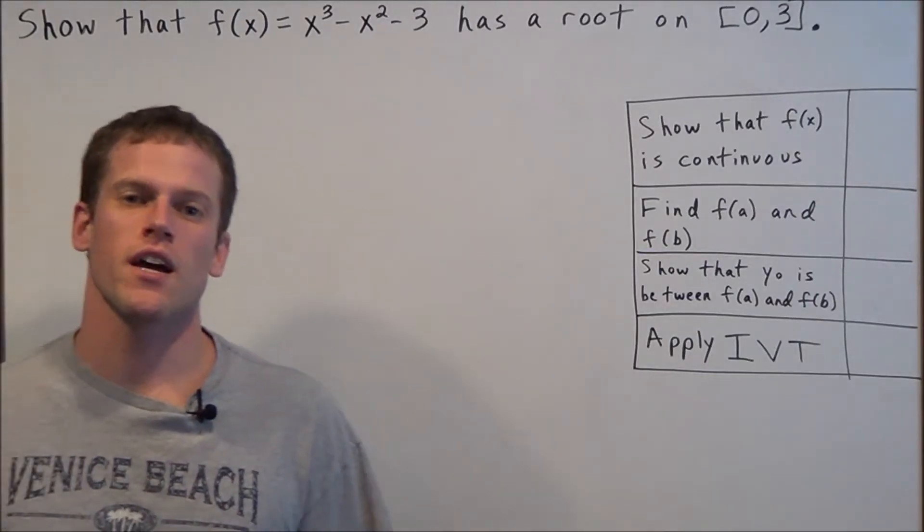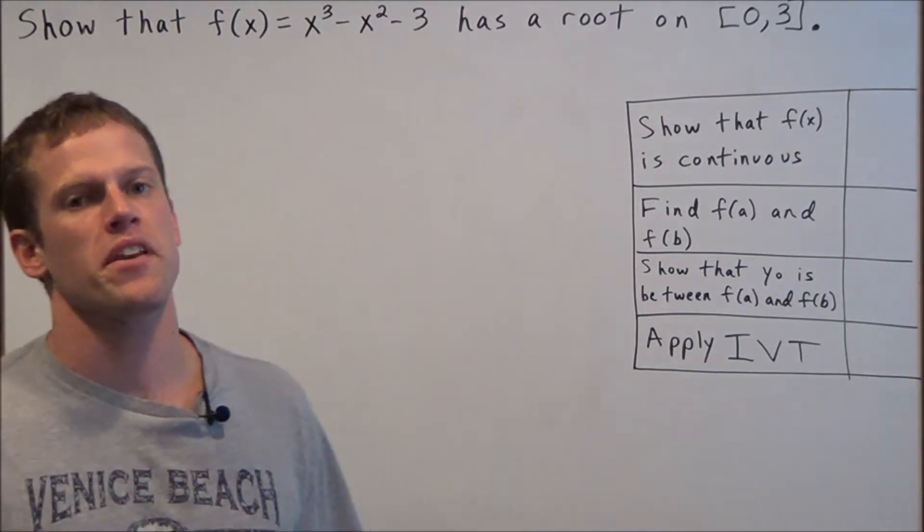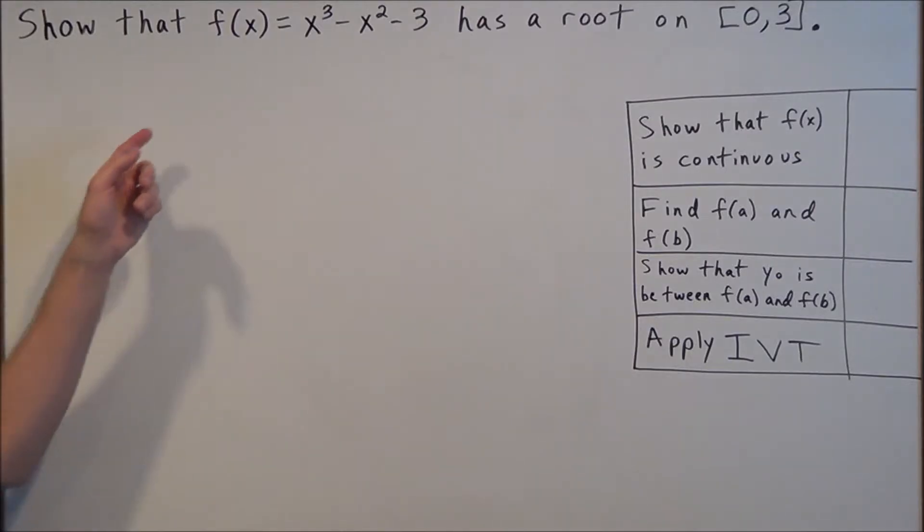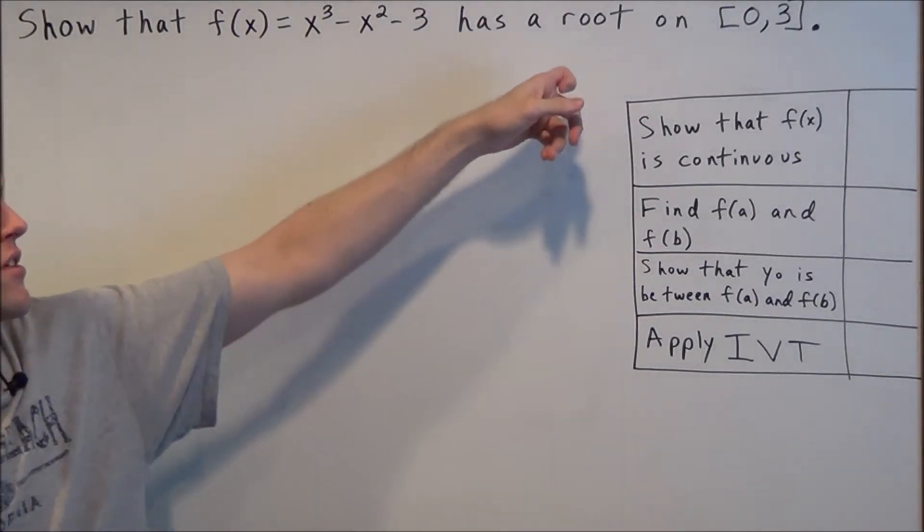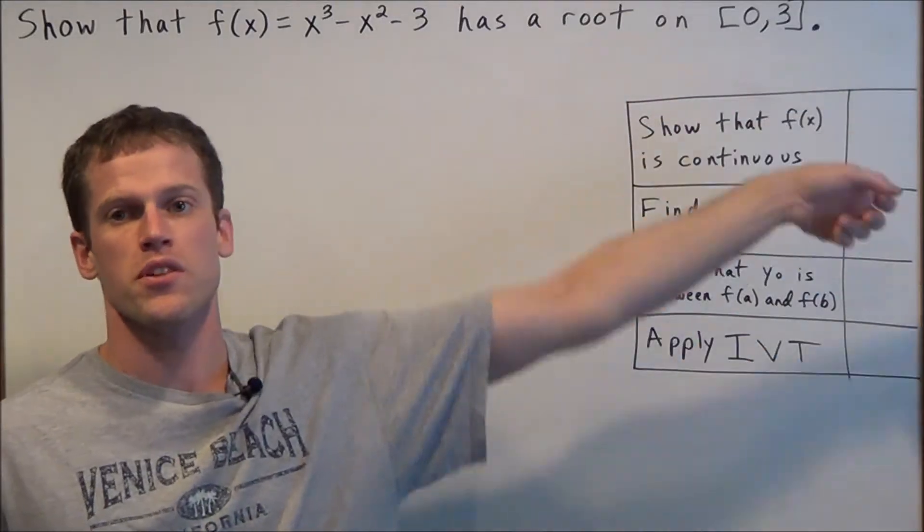Hi, my name is Vincent, and today I want to take a look at how to use the Intermediate Value Theorem. We have the problem: show that f(x) = x³ - x² - 3 has a root on the interval from 0 to 3.